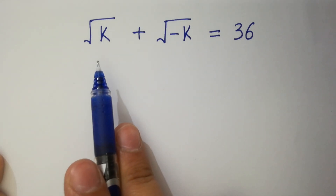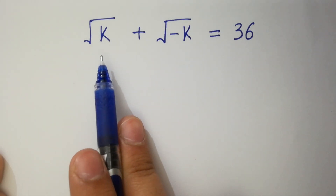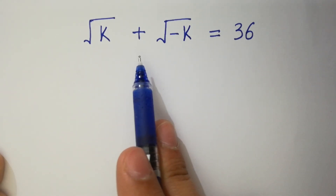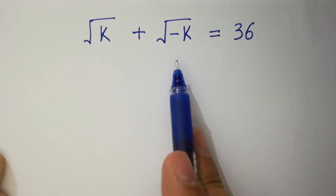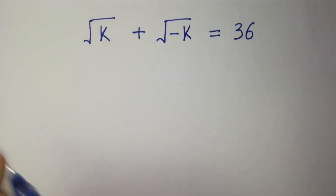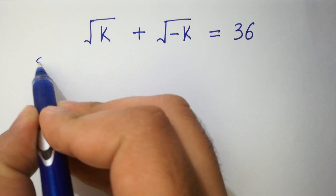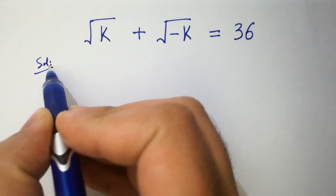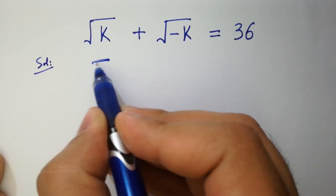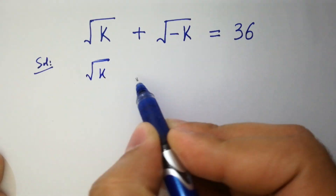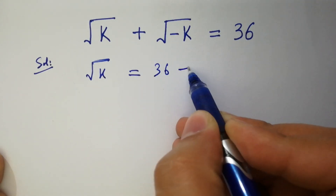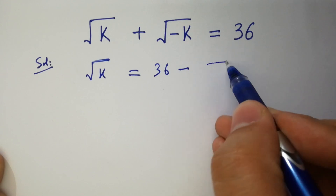Hello friends, find the value of k if square root of k plus square root of minus k equals 36. Let's have a solution. It can be written as square root of k equal to 36 minus square root of minus k.